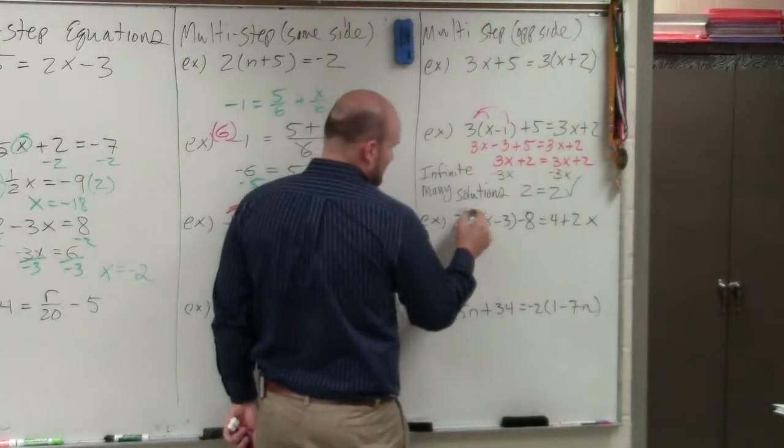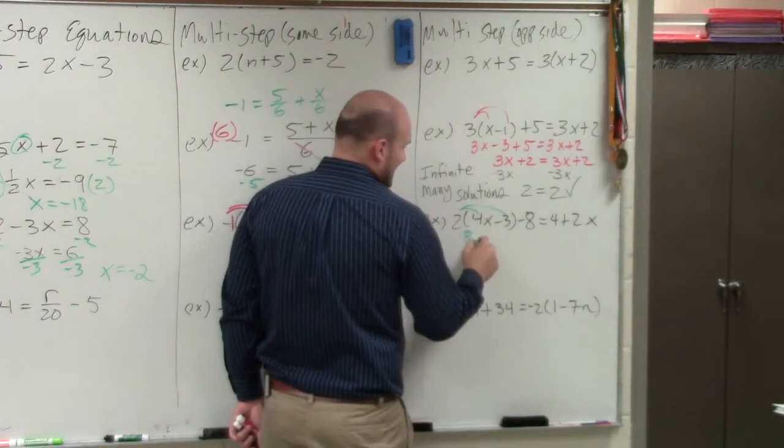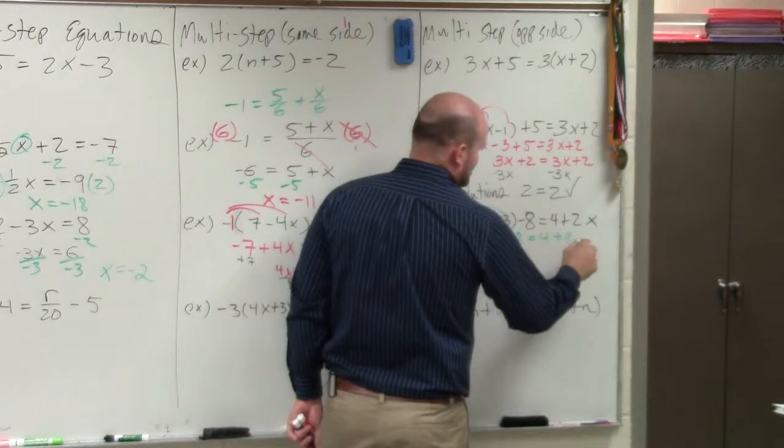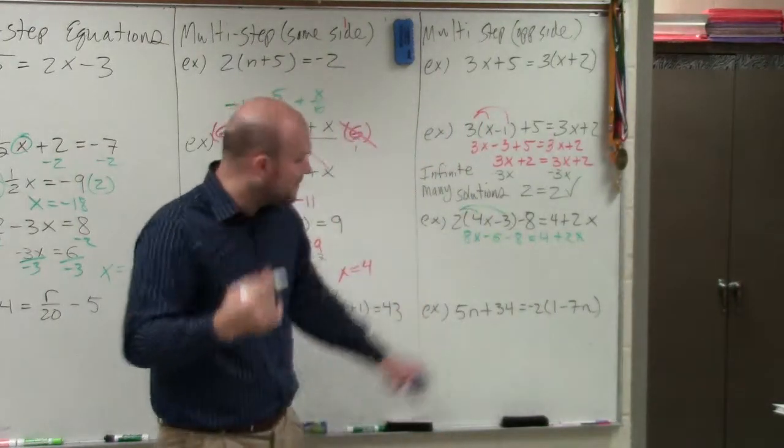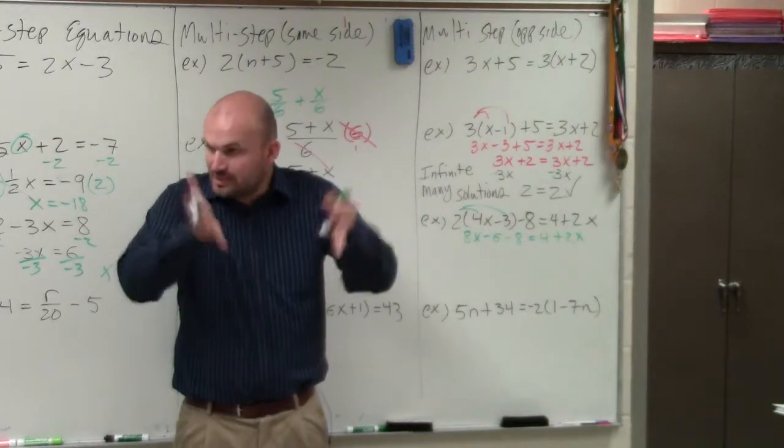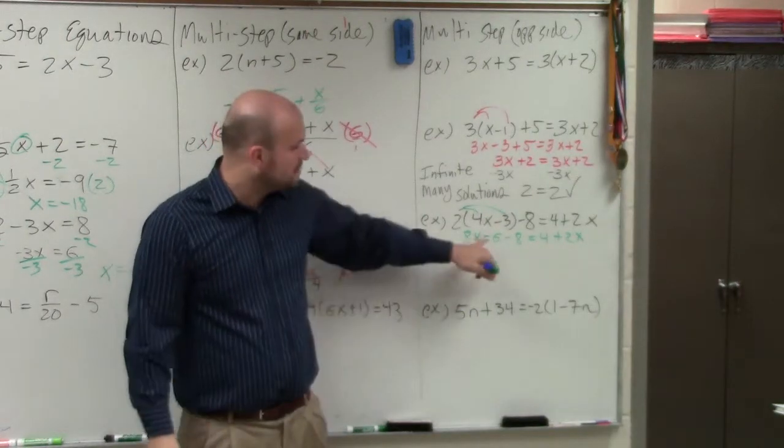basically again, we're going to apply the distributive property. So I get 8x minus 6 minus 8 equals 4 plus 2x. Again, remember, these are on the same side. Even if you had two x's on the same side, you can combine them. So they're on the same side.